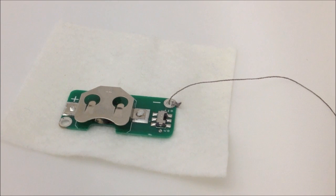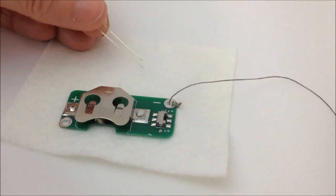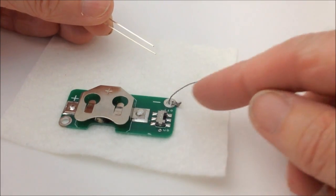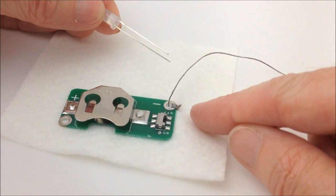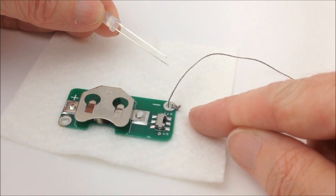I'm now going to attach the LED, but first of all I'll need to take the LED and identify which is the negative leg and which is the positive leg, because we're going to attach the negative leg of the LED to the negative side of the circuit that we've just stitched.